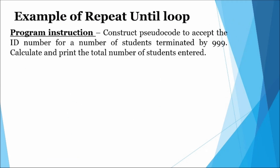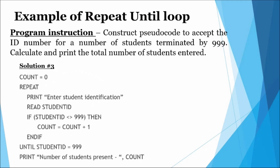Example of repeat-until loop: the following problem statement requires a pseudocode to accept the ID number for a group of students, terminated by the value 999. The algorithm is then required to calculate and display the total number of students entered. The solution shows a variable 'count' initialized to zero to keep track of the number of students. The repeat keyword indicates the start of the loop. A selection statement controls whether the variable 'count' is incremented by one. A condition 'student ID equal to 999' is evaluated — if false, the loop continues; otherwise the loop is terminated.